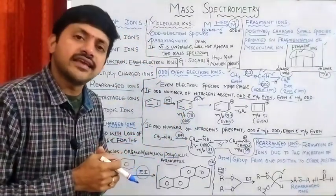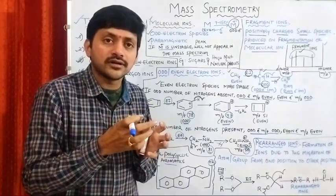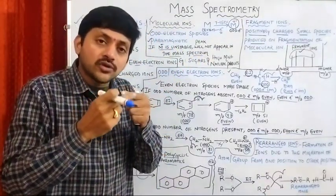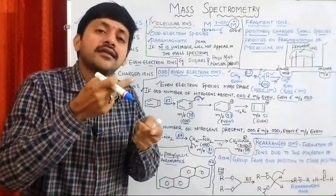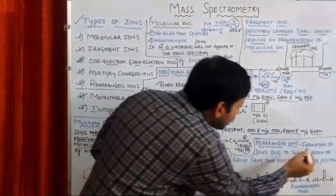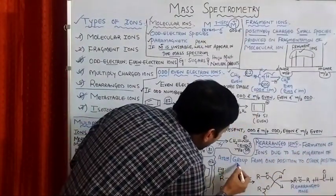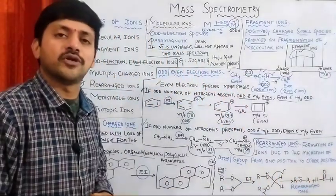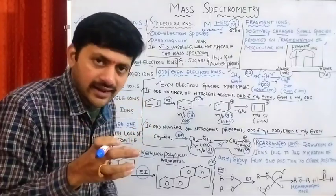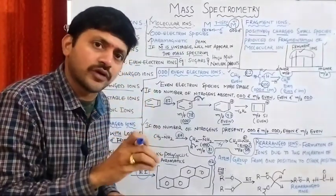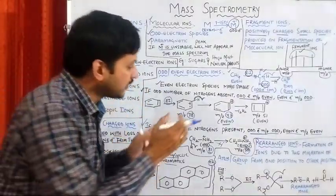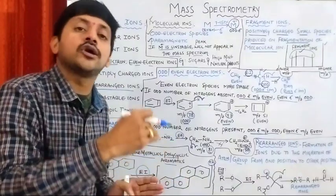The next type is rearranged ions. Rearrangement means the shifting of a group or atom from one portion of the molecule to another. Ions produced by rearrangement of any atom or group are called rearranged ions. As an example, consider an ether, which has sigma bonding electrons and lone pair electrons. We remove one lone pair electron from oxygen to form the molecular ion, which is then subjected to further cleavage — the fragmentation process.